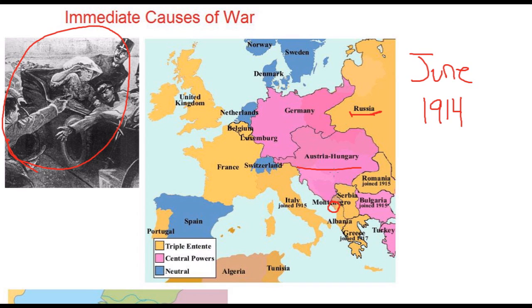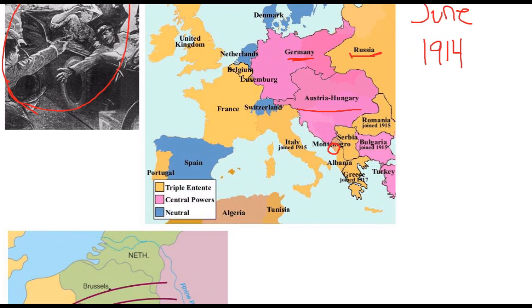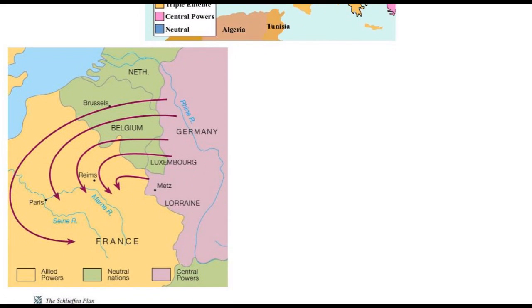Russia told Austro-Hungary that if you attack Serbia, you are attacking Russia and will be at war with us. Germany, because of its political alliance, supported Austro-Hungary and was pushing them to punish Serbia, convinced it could stand up to a war with Russia. As a result of this brinksmanship — nations pushing and pushing — with Austro-Hungary refusing to back down and France, Germany, and Russia all taking stands because of their political alliances, the situation was ripe for war.